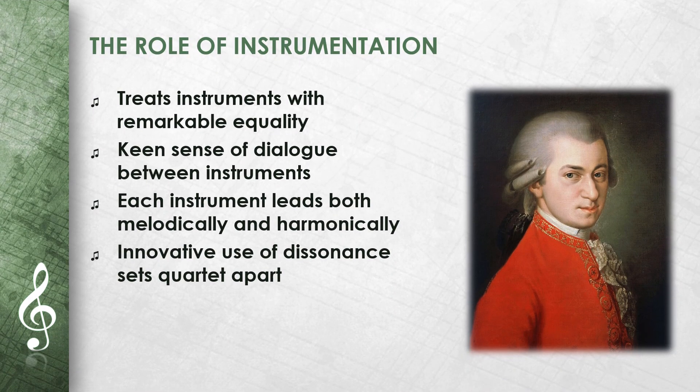In this string quartet, Mozart treats the instruments — two violins, viola, and cello — with remarkable equality and a keen sense of dialogue. Each instrument has the opportunity to lead both melodically and harmonically, resulting in a rich and multilayered texture. The innovative use of dissonance, especially in the first movement, is a key feature that sets this quartet apart in the chamber music literature.